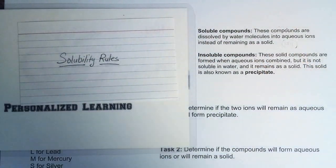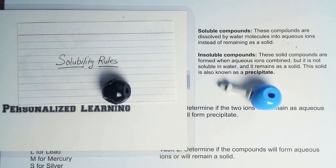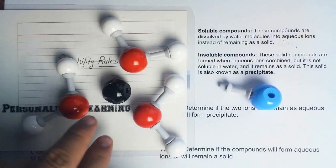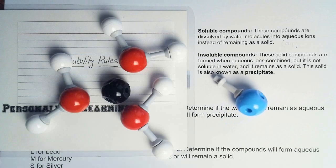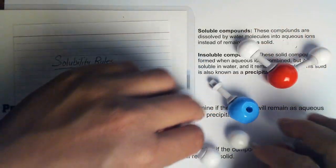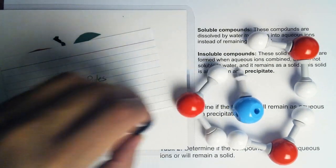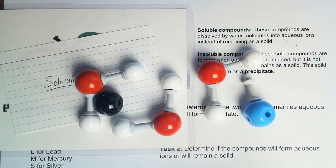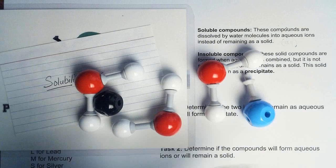The way it works when a compound is being dissolved by water is that it will break the ions, because the water molecules will surround the ions. So therefore, these ions will never go back together, because they are being surrounded by water molecules from all directions. So therefore, it remains as an ion in an aqueous form. There's no way it's going to go back together as a solid.